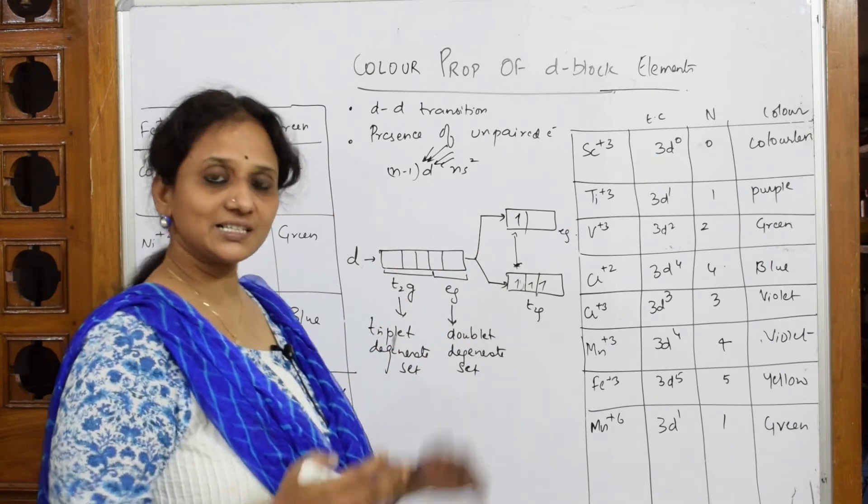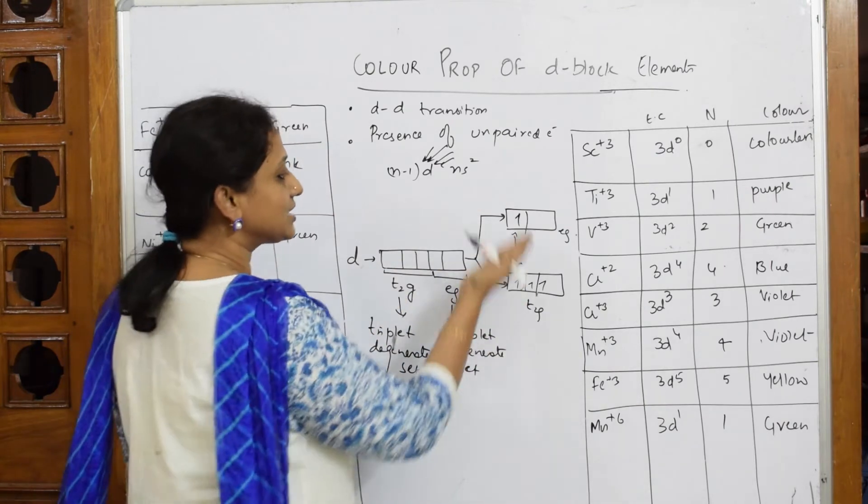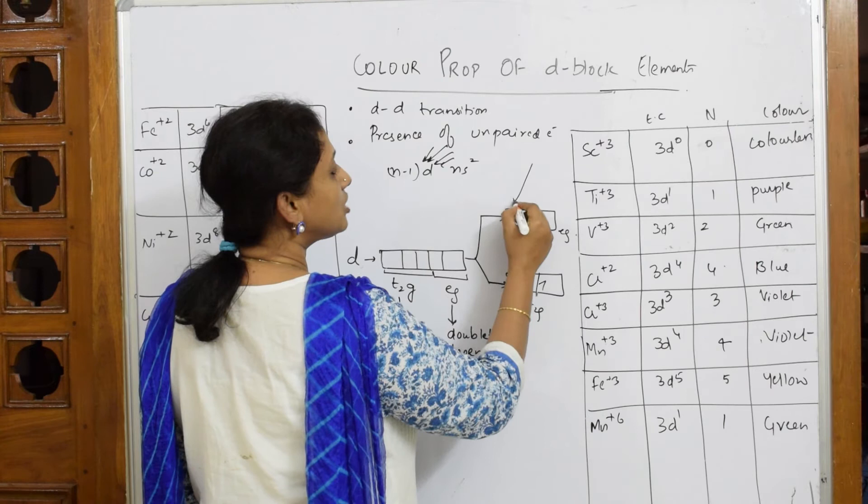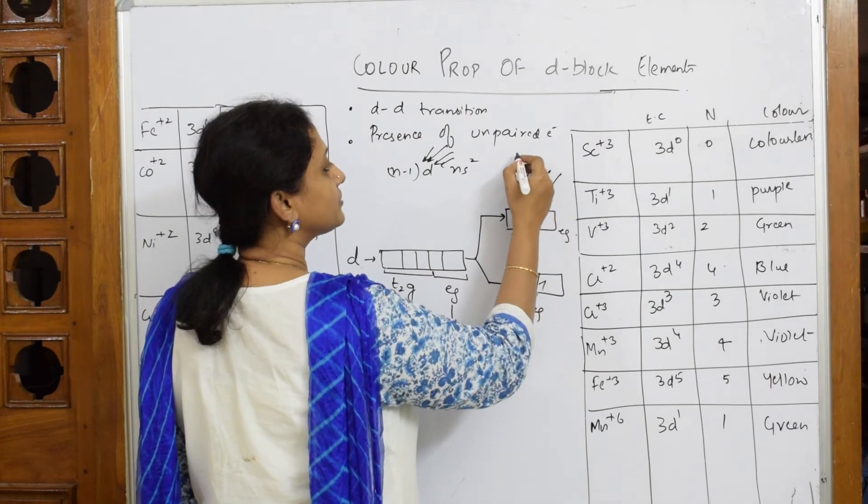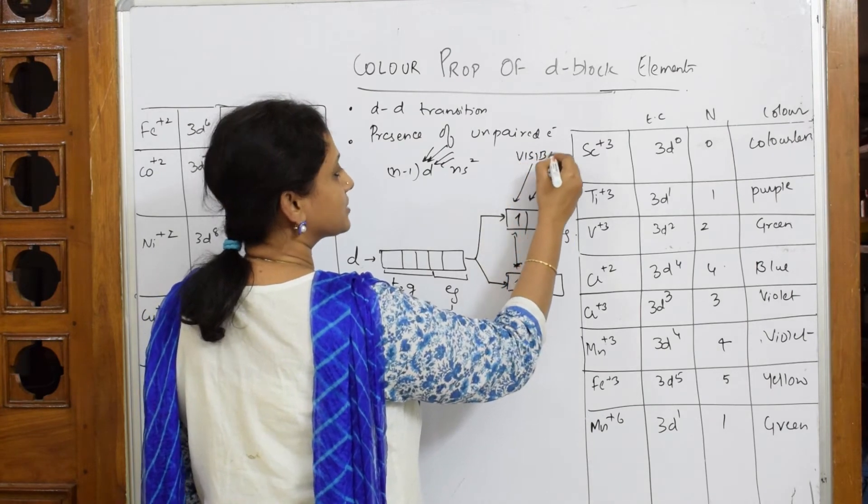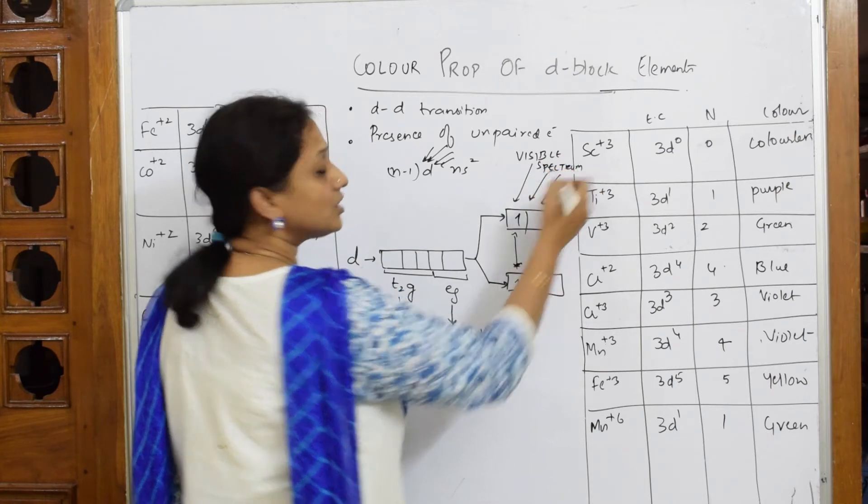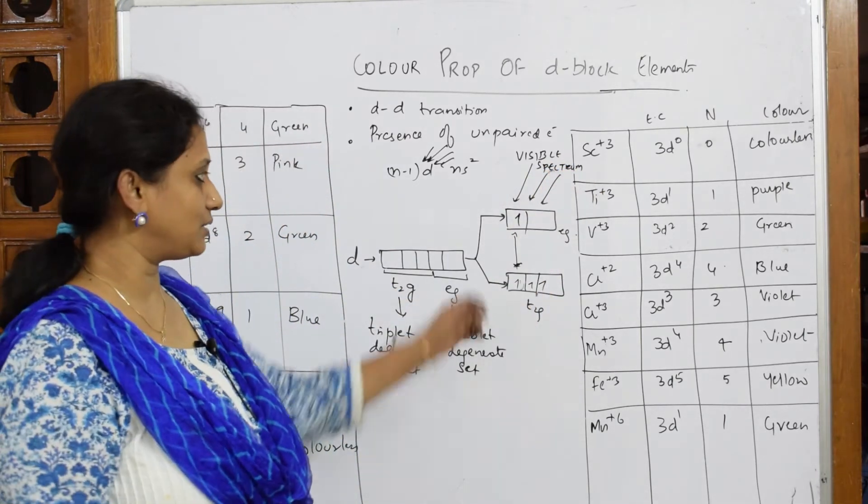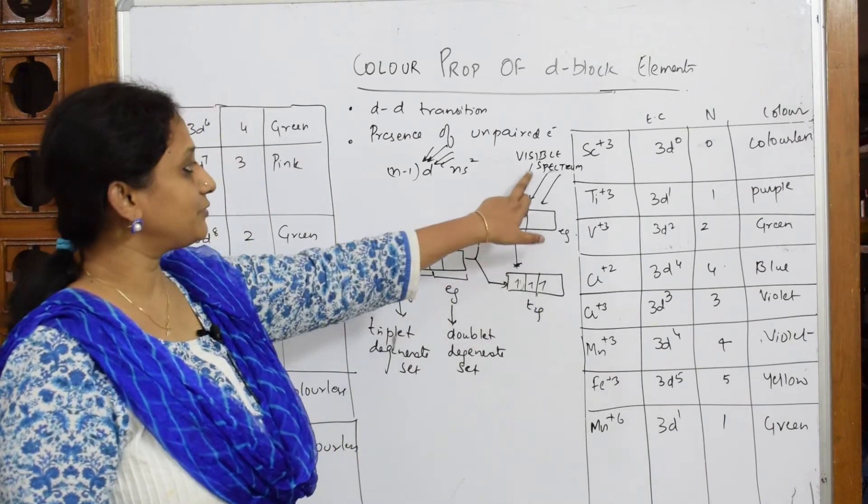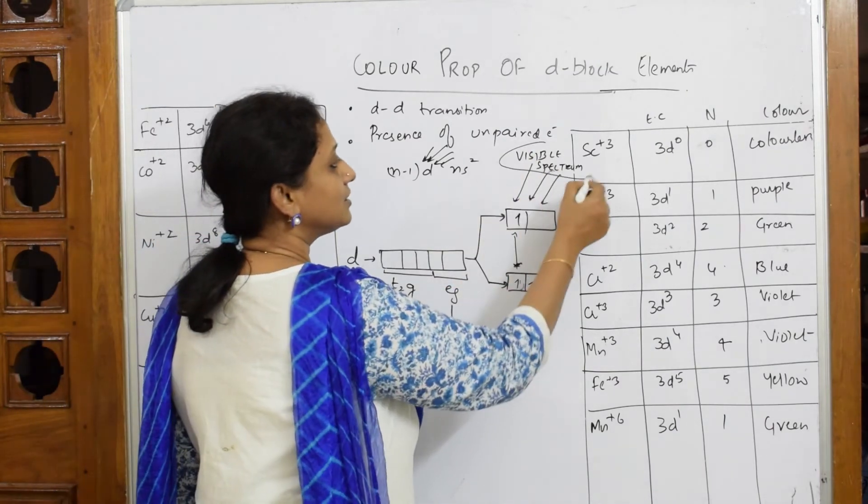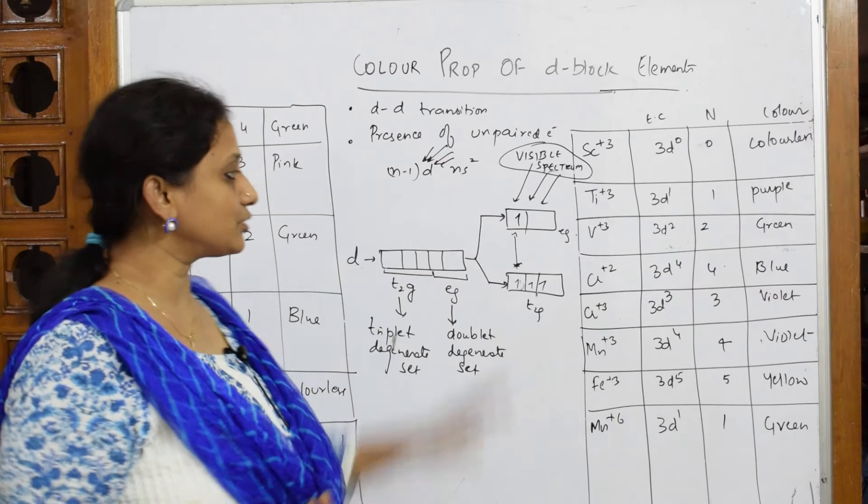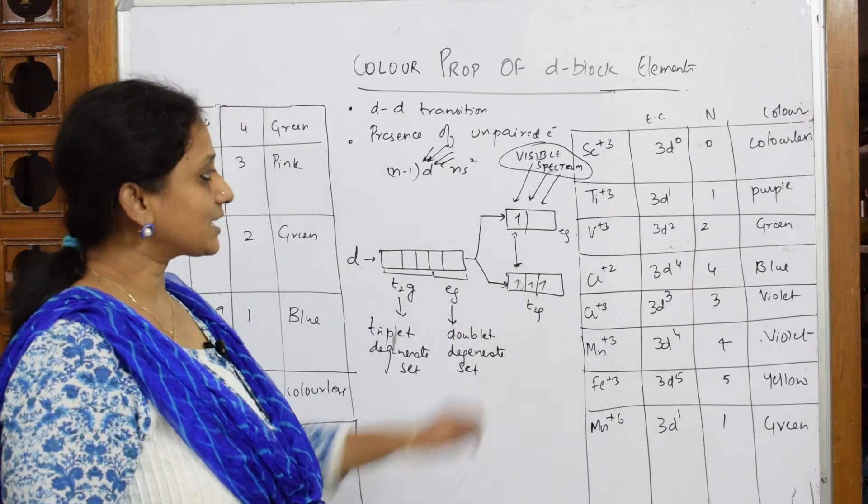During this process, as the energy difference is very less, once it gets excited it's going to absorb a light of frequency from the visible spectrum. According to that frequency, it's going to absorb light for that particular metal atom, and it will show different colors.